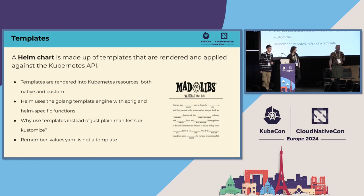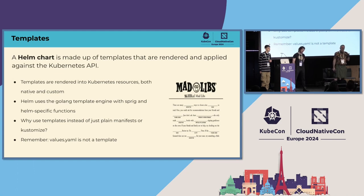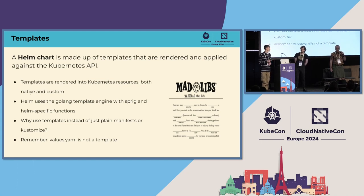A Helm chart is made up of templates that are rendered and applied against the Kubernetes API. You fill out your mad libs — all the spaces for your values — and it creates your resources and applies them to the API, creating deployments, services, and all that stuff you wanted to deploy. Helm templates use the Go template engine with a bunch of functions — most from Sprig, a few built into Helm — and they're a really powerful set of tools.